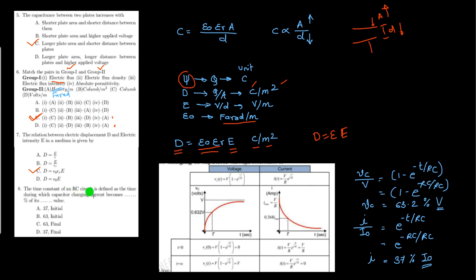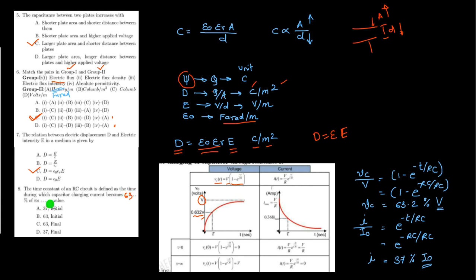Next: the time constant of an RC circuit is defined as the time during which the capacitor charging current becomes what of its initial value? Looking at the charging characteristic, Vc = V(1 − e^(−t/RC)). When the capacitor voltage reaches 63% of the final value, that defines the time constant. So option C is correct — you should be able to judge this from the graph.